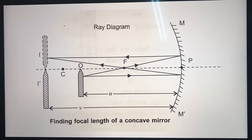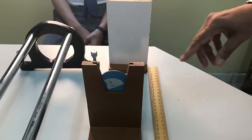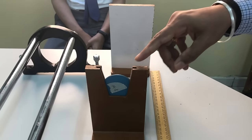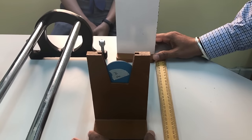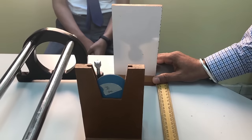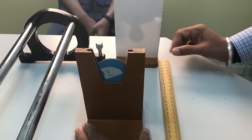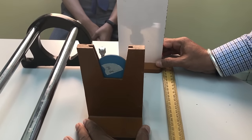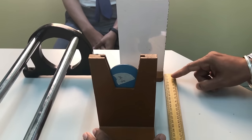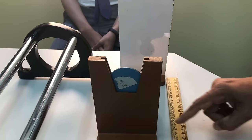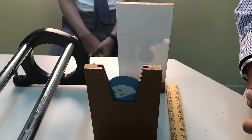This is a diagrammatic representation for finding the focal length of a concave mirror. To find the rough focal length, use the distant object method — focus a distant object on a wide screen by moving the mirror towards the screen. Here, a sharp image is obtained at approximately 15 cm, so the rough focal length is 15 cm.